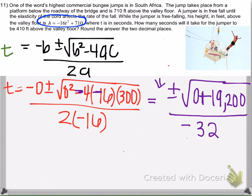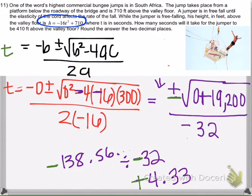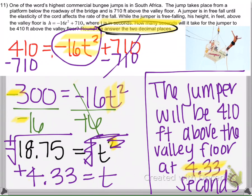Go ahead and put that in your calculator: the square root of 19,200, which is about 138.56, then divided by negative 32 gives negative 4.33. Then do it again with the negative square root of 19,200, which gives negative 138.56, and divided by negative 32 gives positive 4.33 — exactly what we got using the square root property method.